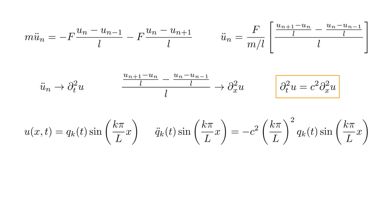Plugging this expression into the wave equation, we get q_k double dot times the sine equals minus c squared times q_k times the sine.